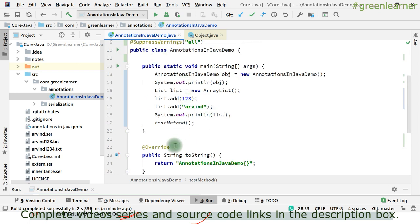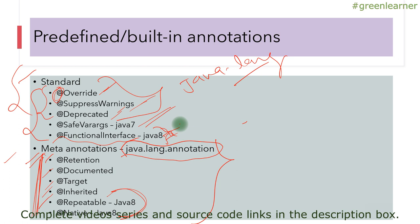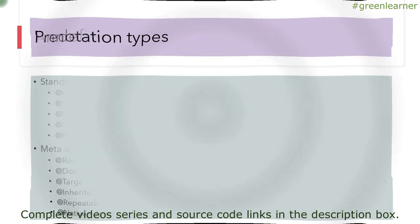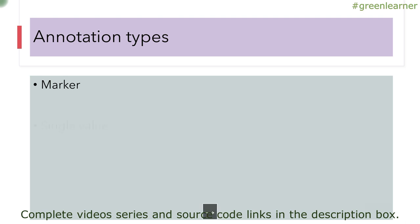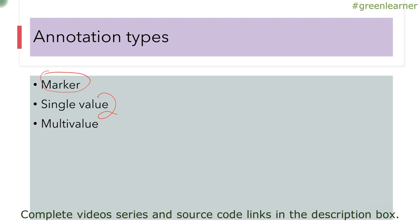That covers @SuppressWarnings, @Override, and @Deprecated. The @FunctionalInterface annotation will be covered in detail when we discuss functional interfaces, lambdas, and Java 8 features. Meta annotations help in creating other annotations — we will create a custom annotation and process annotations in the next video. Finally, there are three annotation types: marker annotations that take no value (like @Deprecated), single-value annotations that take one value (like @SuppressWarnings), and multi-value annotations that take more than one value, which we'll see when we create custom annotations.